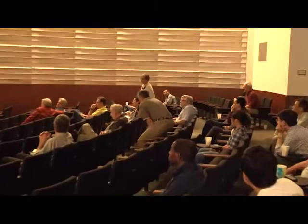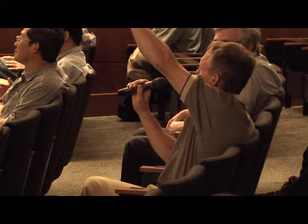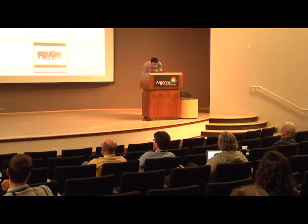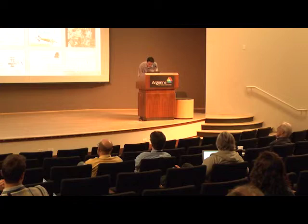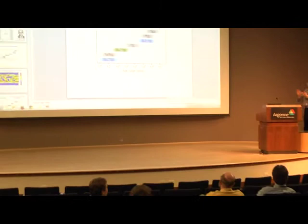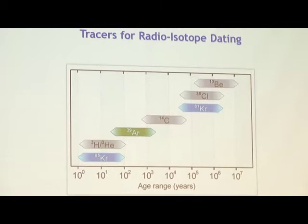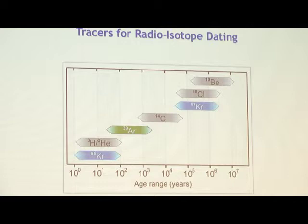Question: In the plots of different radioisotopes for dating, each one had a useful range that looked to be about two orders of magnitude long. I would have expected longer-lived isotopes to be useful over a longer range. Why is that not so? Answer: Because it's a log plot. On a linear plot this would definitely be apparent, but on a log plot they all look like a constant width. We basically plotted from one-tenth of the half-life to ten times the half-life — on a log plot they look like an equal span.